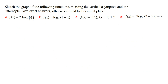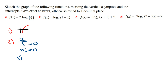Sketch the graph of the following functions, marking the vertical asymptote and the intercepts. Give exact answers, otherwise round to one decimal place. Part A: f equals 2 log e of x over 3. Step 1 — we need to determine the shape of the graph. Both the log and the x inside the brackets are positive, so the shape of the graph is going to be in this form. Step 2 — for the vertical asymptote, we let whatever is inside the brackets equal zero and solve for x. Letting x over 3 equal zero and multiplying both sides by 3 gives x is equal to zero. So the vertical asymptote is the line x is equal to zero.